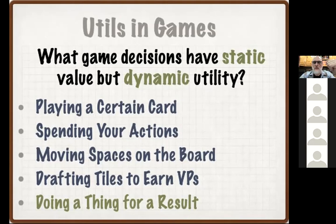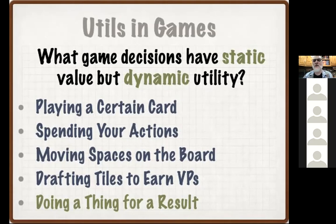Anytime we're doing a thing for a result — even if we're doing the same thing for the same result — I am going to draft this card for five victory points. While it is measurable in that way, its utility to us is dynamic. Drafting it for five points might be great at the beginning of the game, but later on, once we've unlocked a mechanism that allows us to earn even more points with a single action — in a lot of games there's this idea that for every action I perform, I expect to get an action and a half of value out of it, or for every dollar I invest...